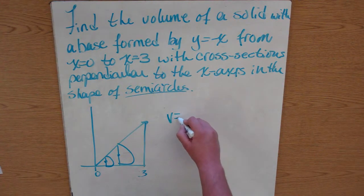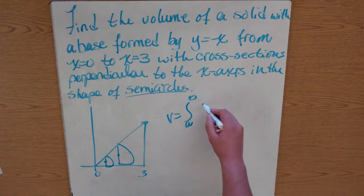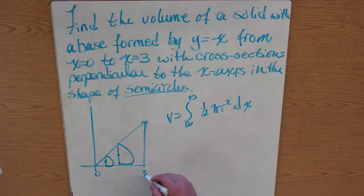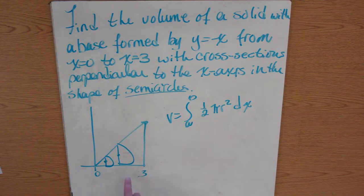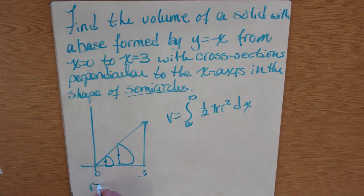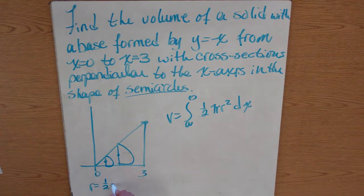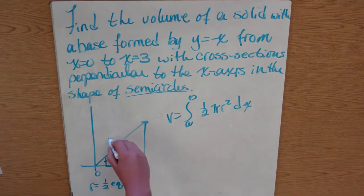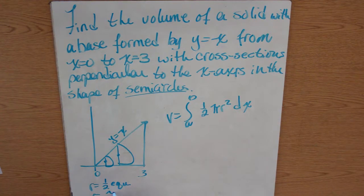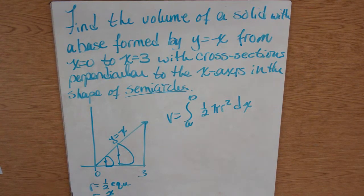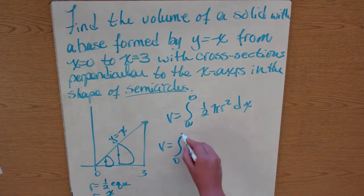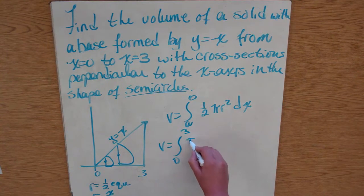Our volume from a to b, we're going to have to use 1 half pi r squared dx. So we have to find the radius of this. Well, what's the radius? Your radius will equal 1 half times your equation. Since our equation is y equals x, our radius is going to be x over 2, or 1 half x.